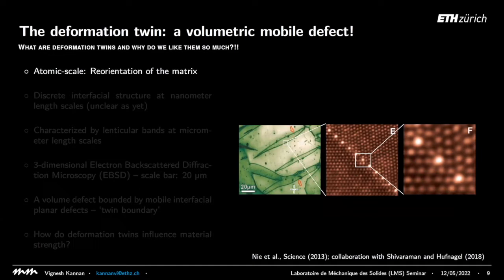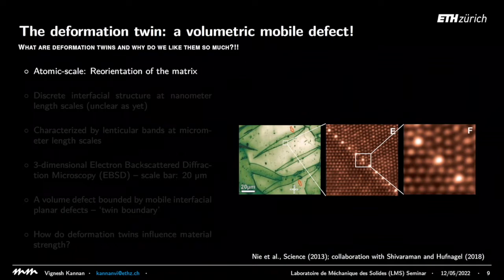This is a sequence of microscope images of a deformation twin. The twins form lenticular bands — this interface is called a twin boundary. If you zoom into this region, you see that the twin boundary is separated by a difference in crystal orientation on either side. On either side of the twin boundary, you have different crystal orientations.